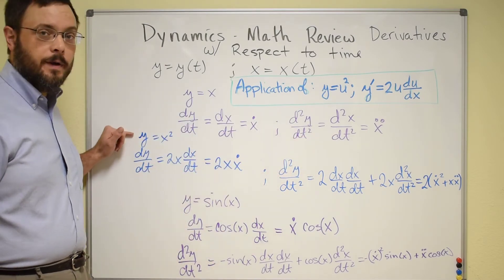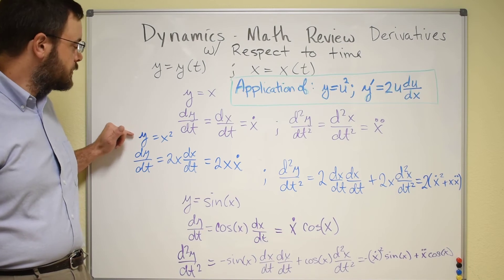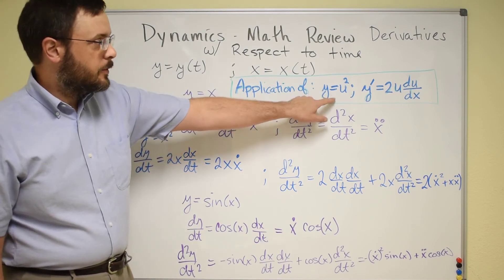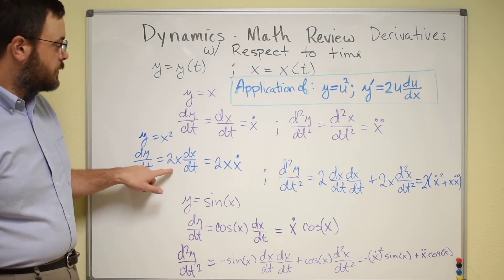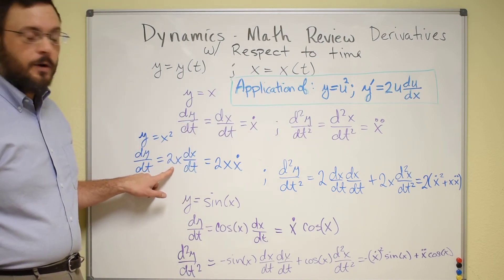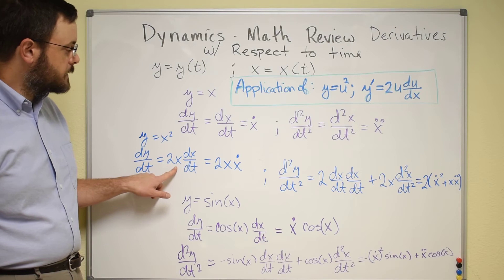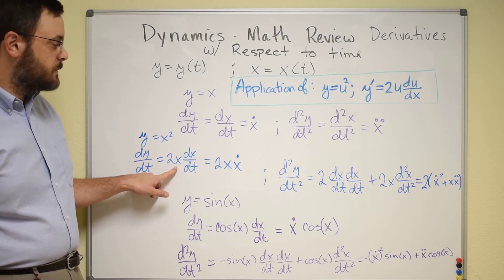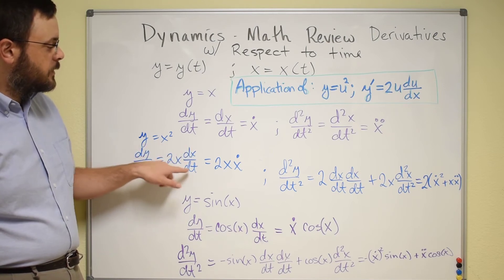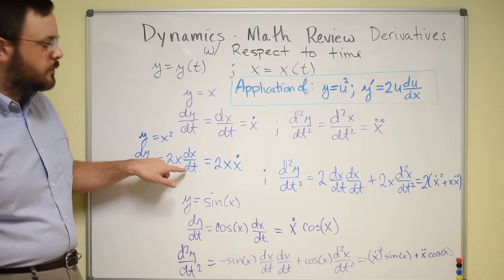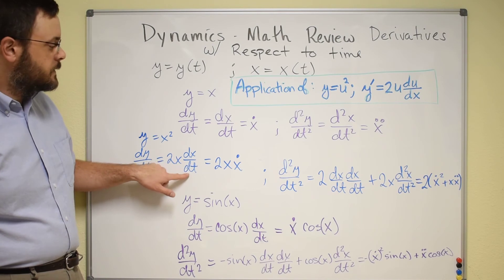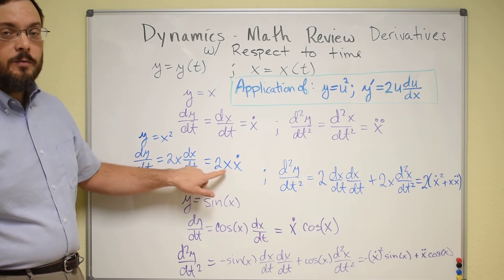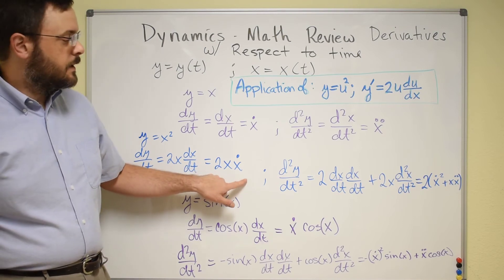Now let's look at some slightly more complicated functions. We have y equals x squared. This is very similar to what we saw up here. We take the derivative of x squared and get 2x. But since we're taking a derivative with respect to time, not x, we end up having to do the derivative of this variable with respect to time. Writing this in dot notation, it would be 2x times ẋ.